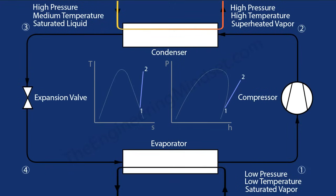Now we can plot Point 3 on the graphs. There has been no change in pressure — the high-pressure side remains constant — but there has been a change in temperature from Point 2 to Point 3. There's also been a change in state: from a superheated vapor (outside the vapor dome) the refrigerant has crossed the saturated vapor line and entered the saturated liquid region.